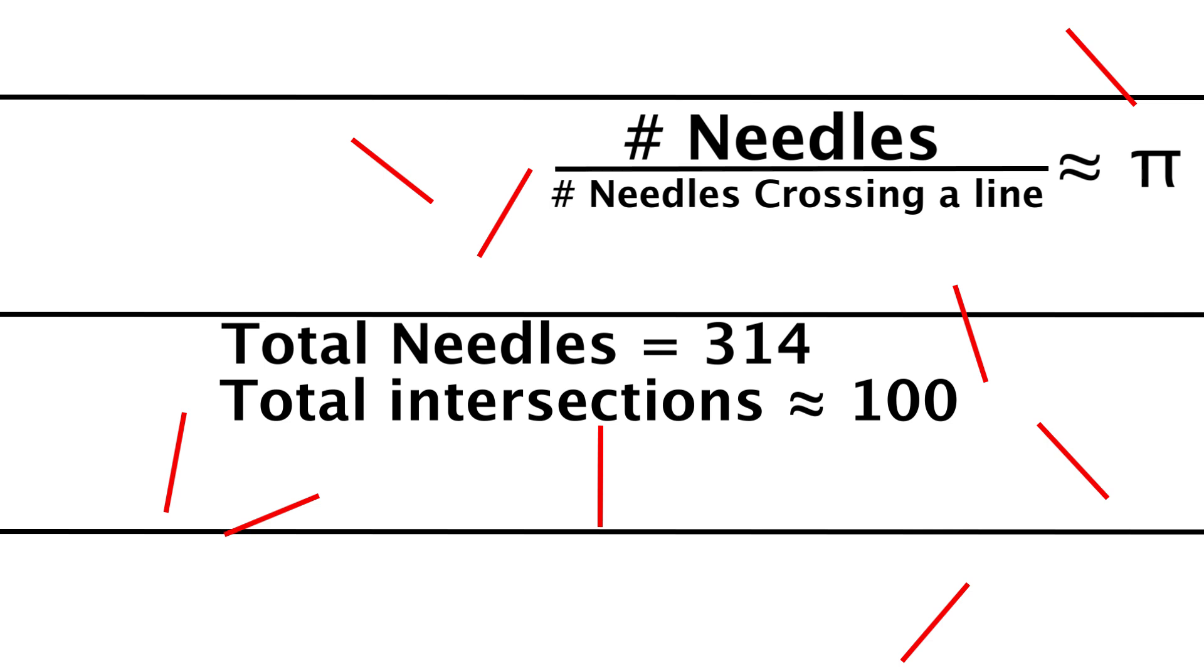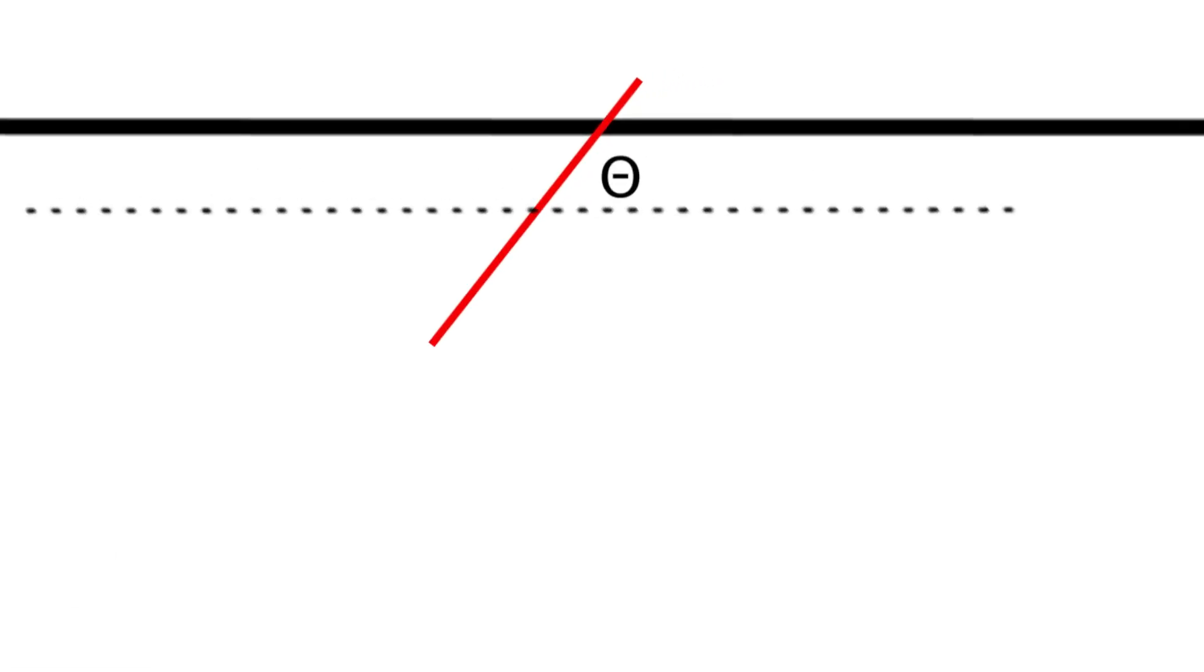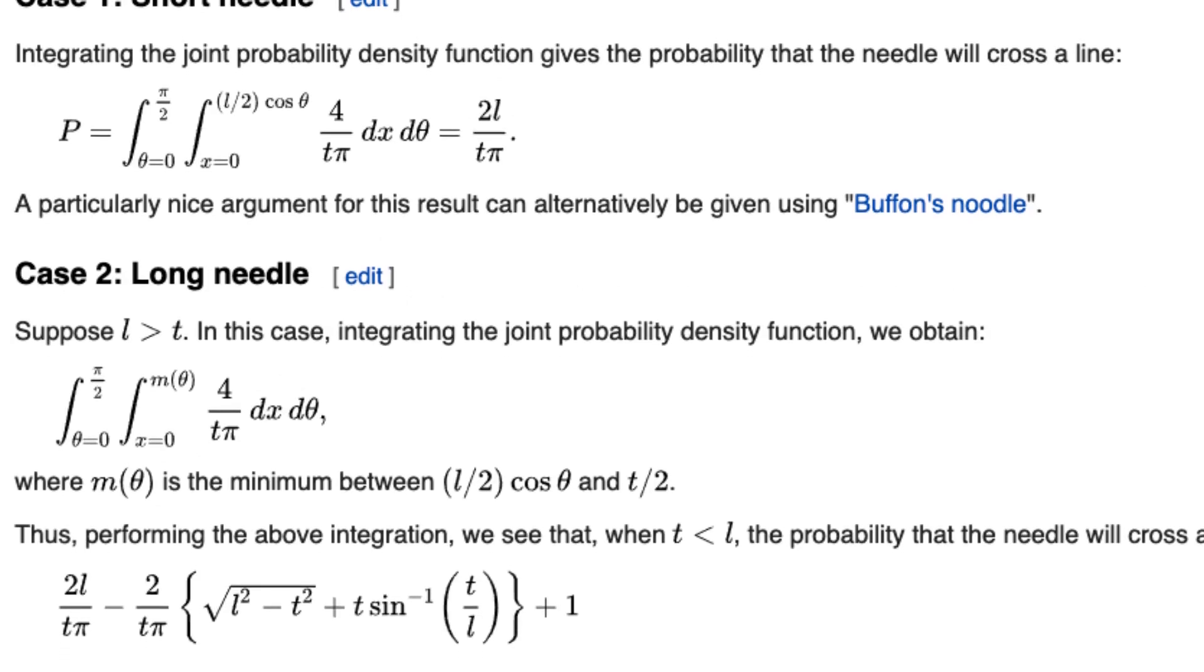The general reason pi shows up has to do with the fact that the needle has an equal probability of falling in any given spot, but also at any angle, and here lies the circle. Right now, it isn't crossing the line, but for certain angles it will. If that vertical distance from the center, or half the length times sine theta, is greater than the distance from the center to the line, then you have a crossing. I'm not trying to go into depth for this video, but if you perform a double integral, pi will appear.